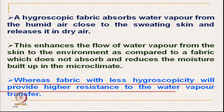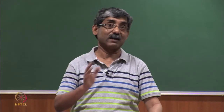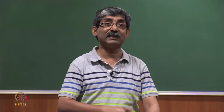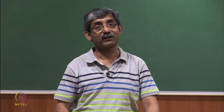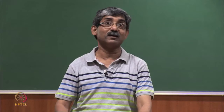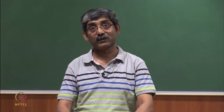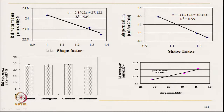Now we will discuss the effect of the shape factor on the relative moisture vapour permeability. In an earlier segment, when we discussed wicking characteristics and liquid moisture transmission characteristics, the increase in shape factor increases wickability. But in the case of moisture vapour transmission, the trend is just the reverse — the moisture vapour transmission rate reduces with the increase in shape factor, the same as air permeability.